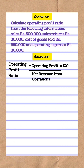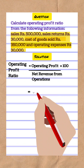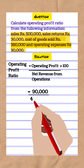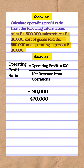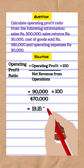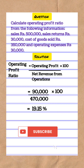In the given question, operating profits can be calculated by deducting cost of goods sold and operating expenses from net sales, which comes out to be 90,000 divided by net sales of 4,70,000, multiplied by 100, giving a result of 19.15%.